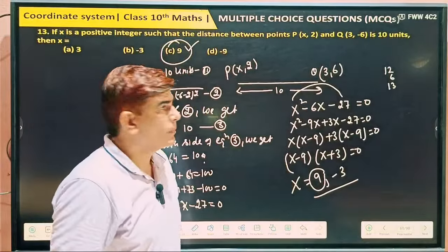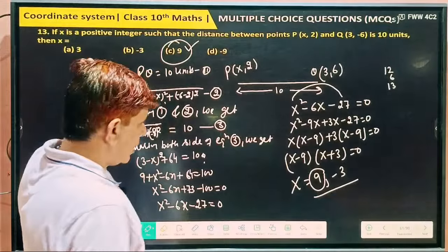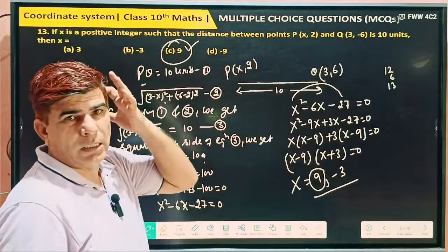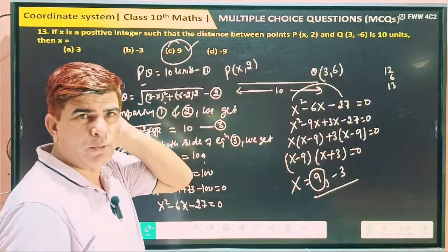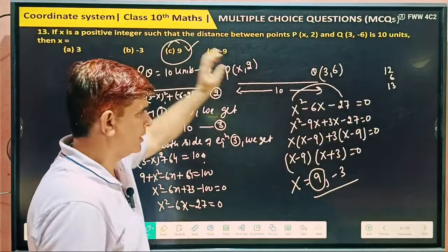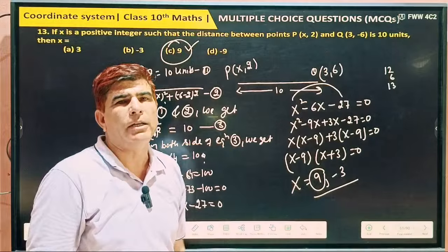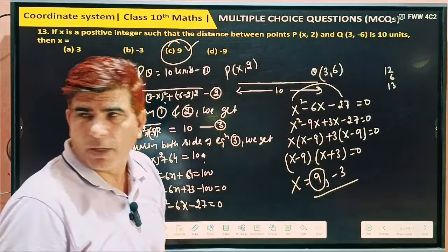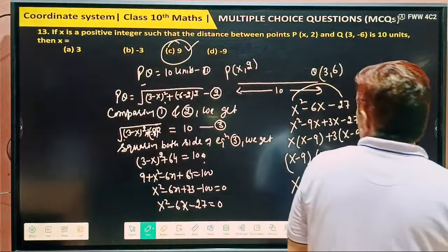But it's saying if x is a positive integer, so which one is the positive integer? This. This is a negative integer. So what's the answer? This is the answer of it. So how much is the value of x? 9. If x is a positive integer, it may be possible if saying x is a negative integer then its answer is minus 3.